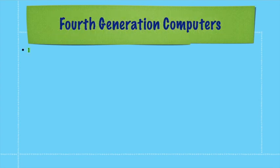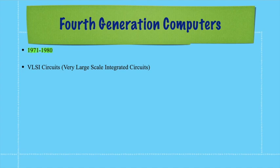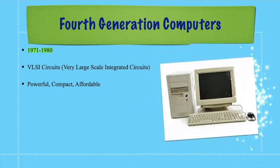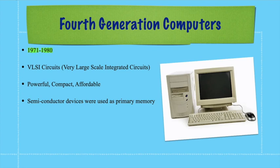Moving forward to fourth generation computers — the time period is 1971 to 1980. Integrated circuits were upgraded by VLSI (Very Large Scale Integrated) circuits, where thousands to millions of transistors and capacitors were packed together for faster processing. Fourth generation computers were powerful, compact, and affordable. Magnetic disks, hard disks, and floppy disks were used for storage.